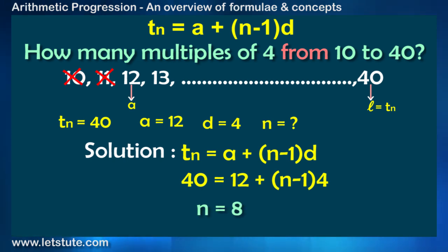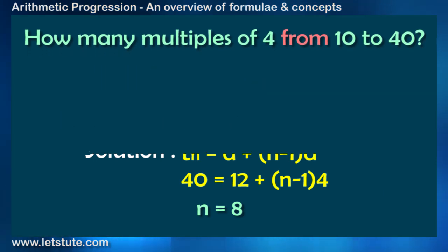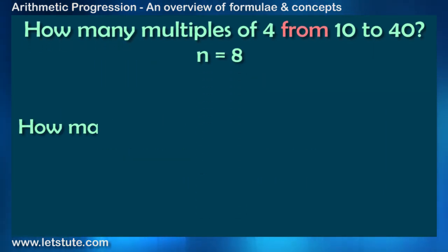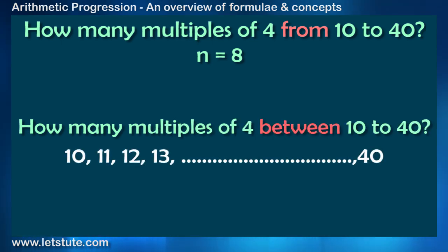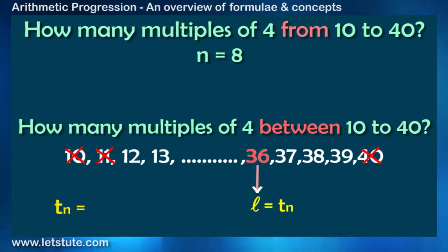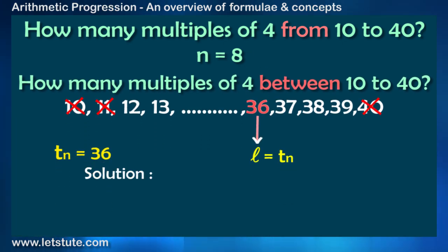That means there are 8 multiples of 4 from 10 to 40. For the same example by using 'between'. So how many multiples of 4 between 10 to 40. Since 10 will automatically be excluded as it is not the multiple of 4 but we will also exclude 40. So the last multiple or say Tn equals 36, right? And therefore 36 equals 12 plus (n minus 1) into 4. And this time we get n as 7.